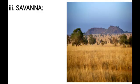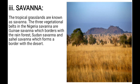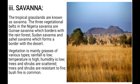Savannah is also known as grassland — tropical grasslands are known as savannah. The tree vegetation belts in the Nigerian savannah are the Guinea savannah, which borders the rainforest, followed by the Sudan savannah, and further north is the Sahel savannah, which forms a border with the deserts. Vegetation is mainly grasses of various types. Rainfall is low, temperature is high, humidity is also low, and trees and shrubs are scattered and resistant to fire, as bushfire is very common in this biome.